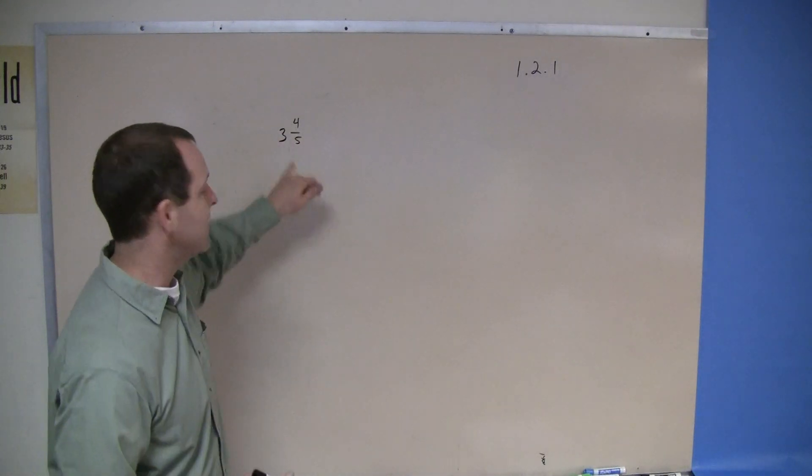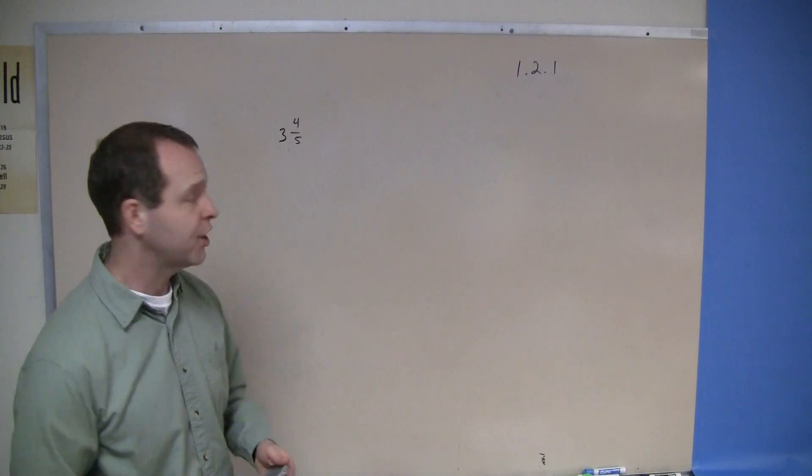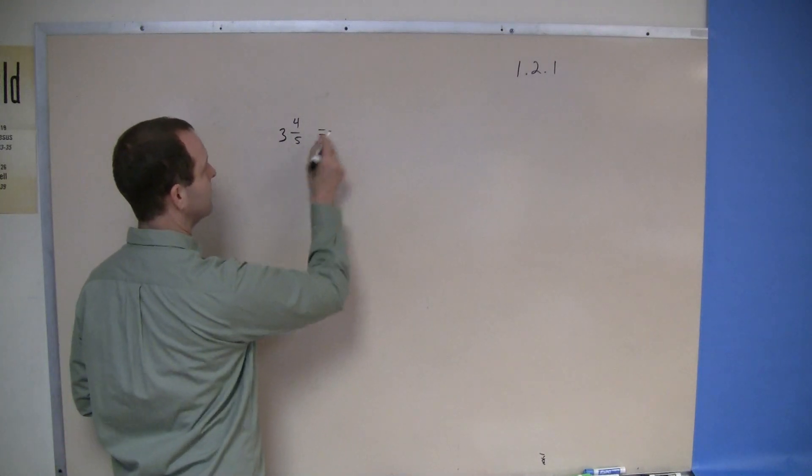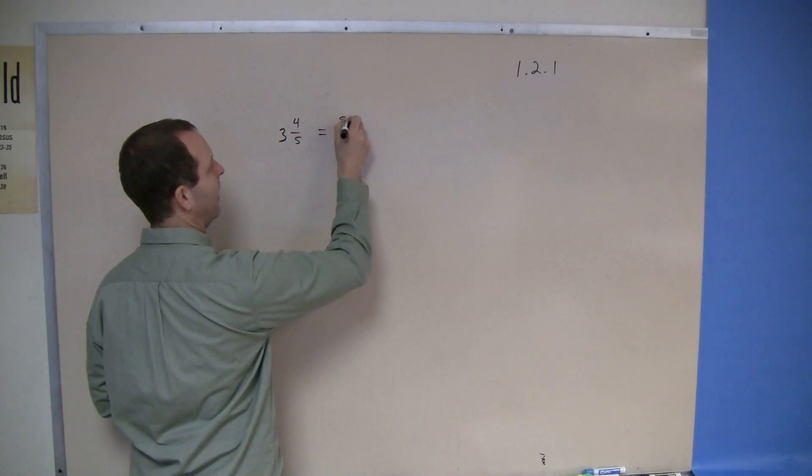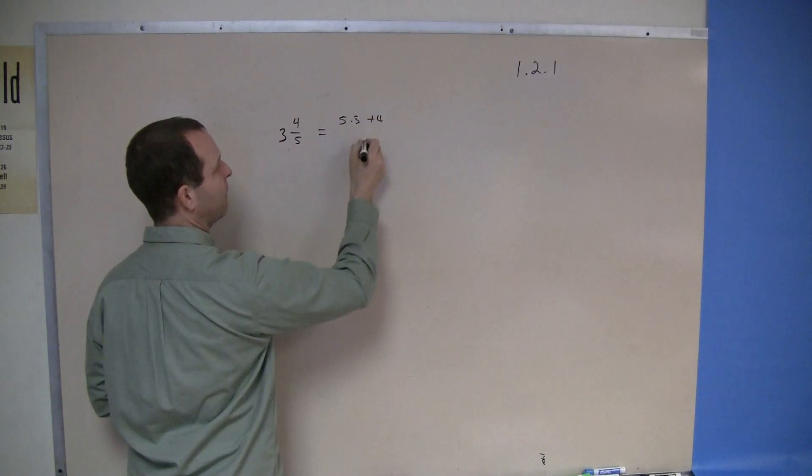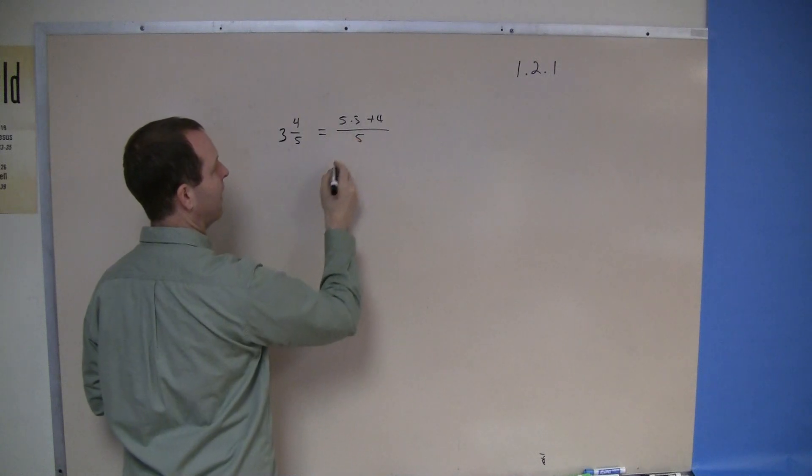So how do you turn this mixed number into an improper fraction? Well the idea is you multiply 5 times 3, the bottom times the top, 5 times the 3, then add the 4 and put that all over 5.